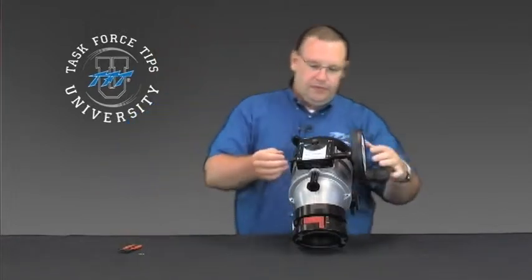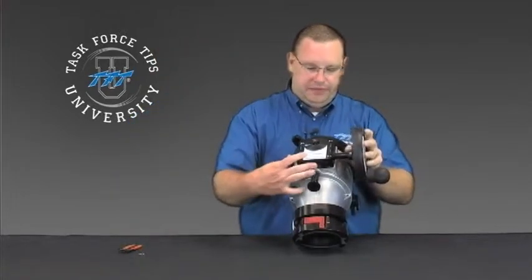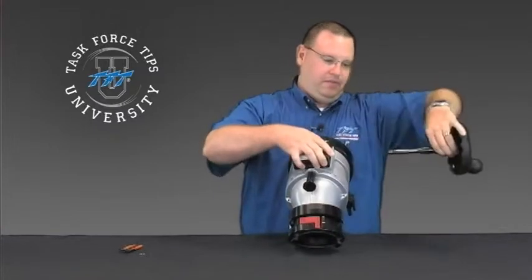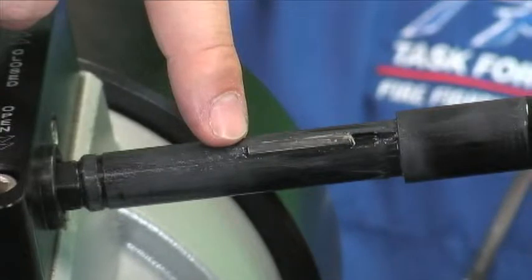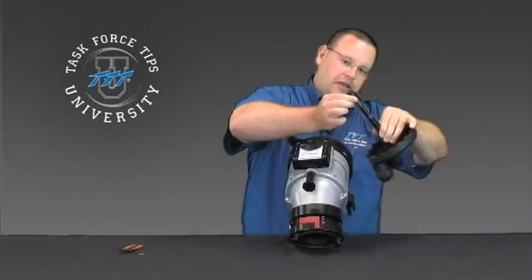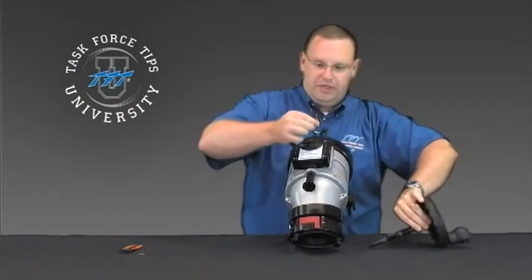Once that's removed, slide the shaft out of the unit, making sure that you still have the key that's in the shaft. Also, it looks like one of the bushings came out with it.